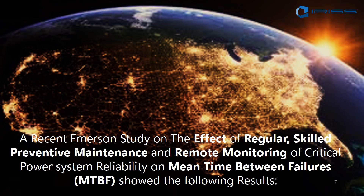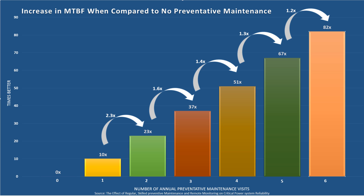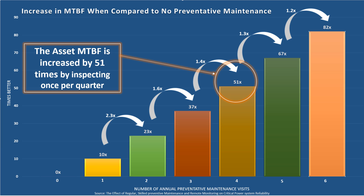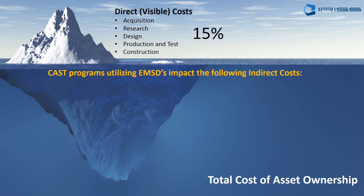Another data point comes from a report by Emerson on the effect of regular skilled preventive maintenance and remote monitoring of critical power systems on the mean time between failure, or MTBF — a key metric in reliability. What we've seen is that if we do four inspections a year, every three months — which is very simple to do with EMSDs — and we use wireless temperature monitoring such as a delta-T alert system, we can see an MTBF increase of 51 times. That is a huge metric for critical power environments such as data centers, where increasing MTBF by 51 times significantly reduces the chance of losing power or equipment.